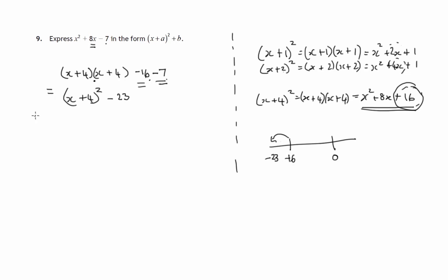Now if you compare how they wanted this to be written, we can see we've done it where a is 4 and b is negative 23. We're adding negative 23 at the end. So we've expressed x squared plus 8x minus 7 in the required form. That would be sufficient for the answer.